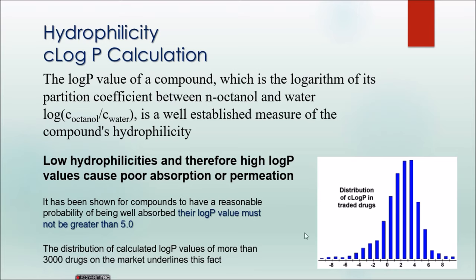Data has shown that most drugs on the market have a log P value not greater than 5. After comparing all traded drugs, they found most drugs have a log P value less than 5 — all are in the range of less than 5, with no negative values. So 0 to 5 is the range for your log P values. About 3000 drugs were found to fall under this line.